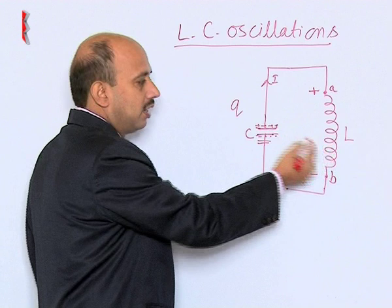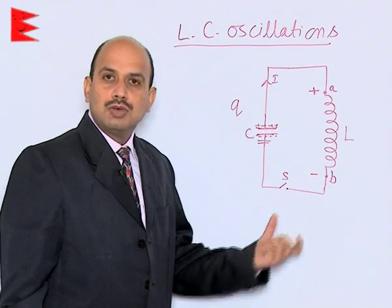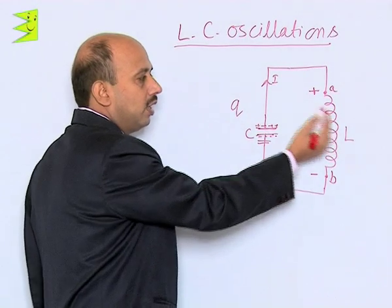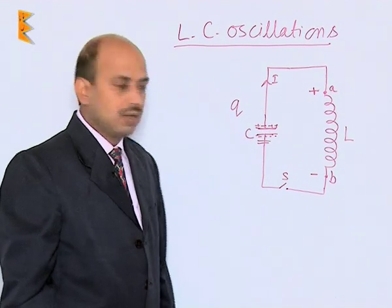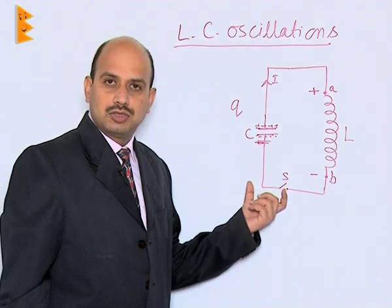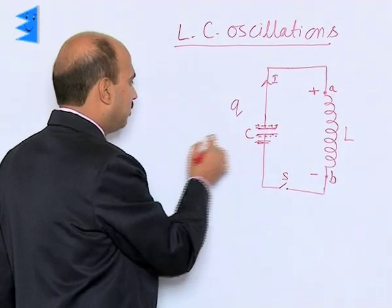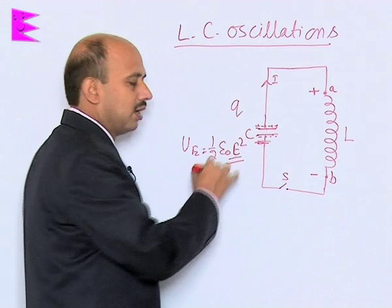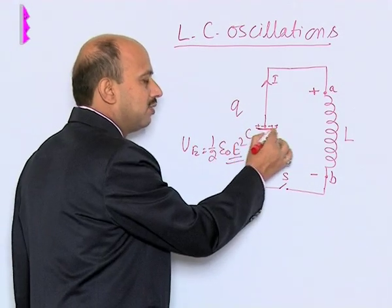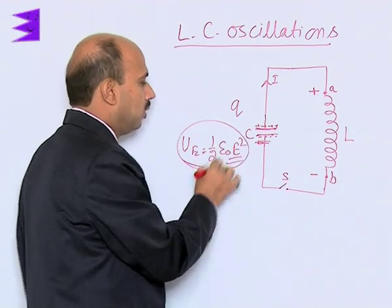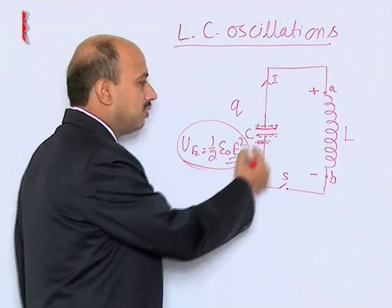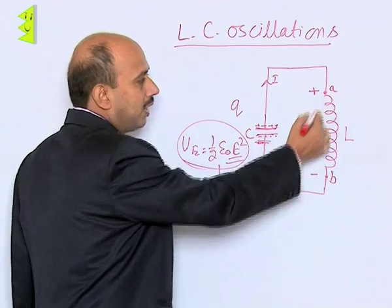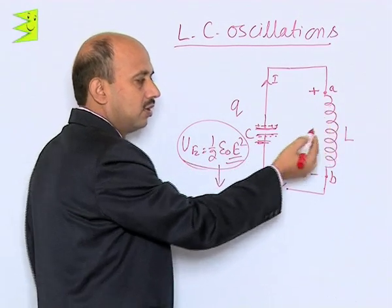As the current increases in the inductor, an EMF is induced which opposes the increase in the strength of the current. Because of that, energy is stored in the form of magnetic field energy, whereas the energy in the capacitor was electrical energy. Initially the capacitor has maximum energy: U_E = ½ε₀E², where E is the electric field. As the capacitor starts discharging, electrical energy starts reducing and magnetic energy starts storing.